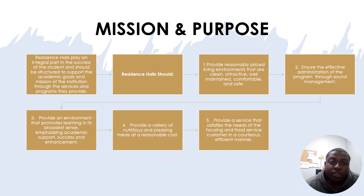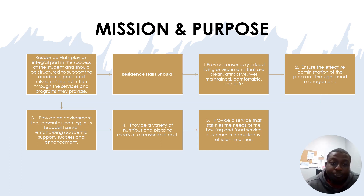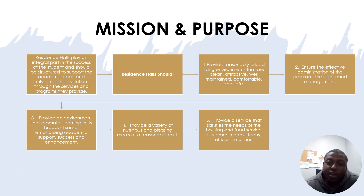Residence halls play an integral part in the success of students and should be constructed to support the academic goals and mission of the institution through the services and programs they provide. There are five things residence halls should provide: reasonably priced living environments that are clean, attractive, well-maintained, comfortable, and safe; effective administration through sound management; an environment that promotes learning in its broadest sense, emphasizing academic support and enhancement; a variety of nutritious and pleasing meals at a reasonable cost; and service that satisfies the needs of housing and food service customers in a courteous, efficient manner. Essentially, residence halls shouldn't just be somewhere students lay their heads — they should aid in academic success.